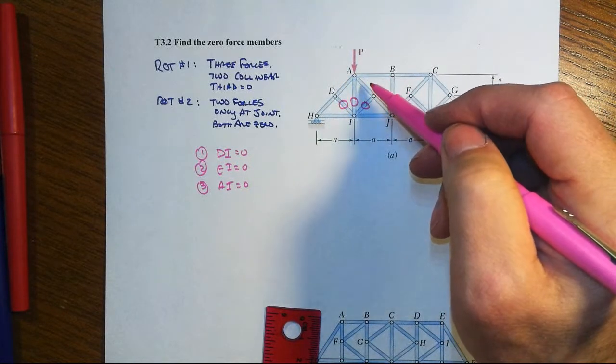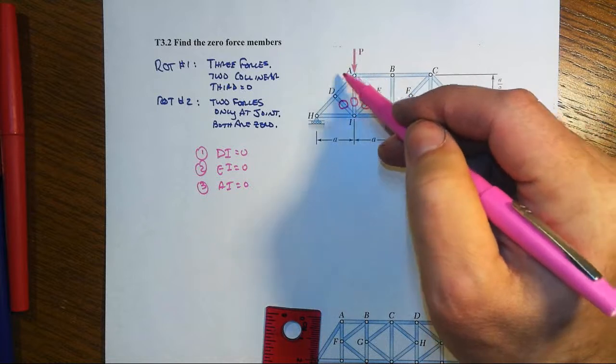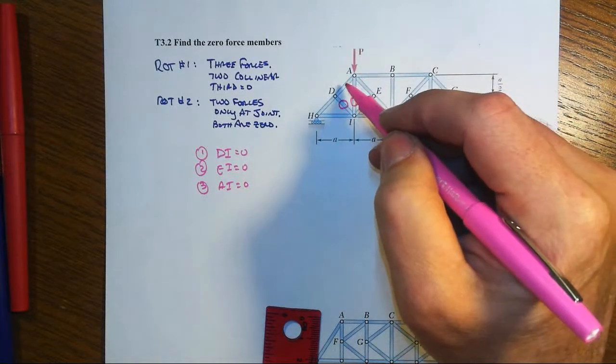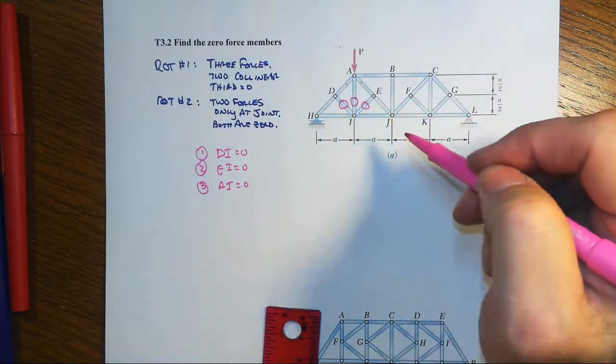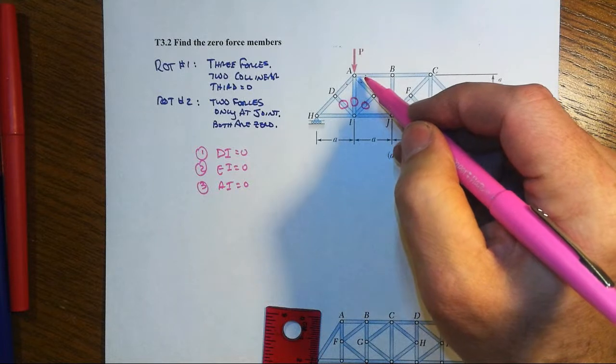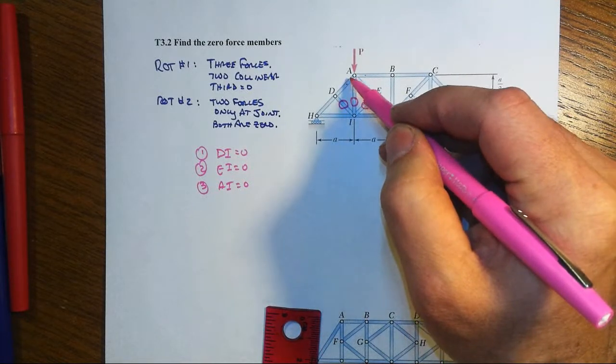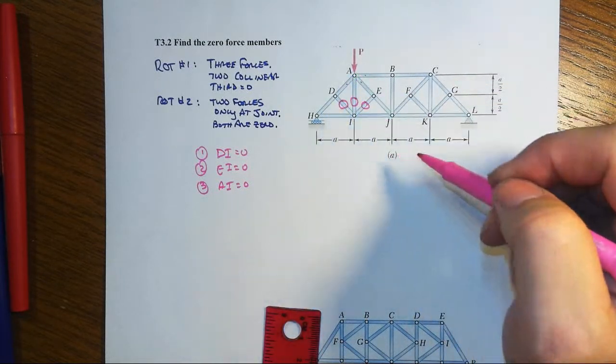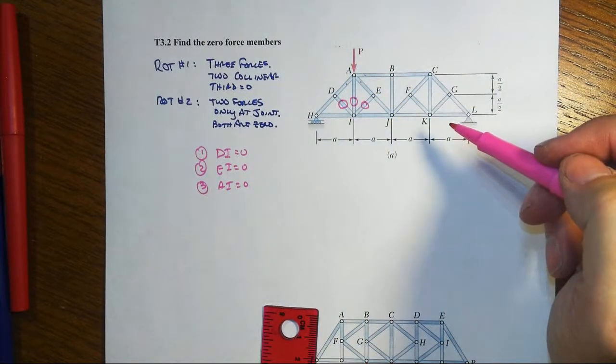But it's a good question to go back and say, well, then how does this structure resist these loads? Well, you still have one, two, three, non-zero, potentially four members here at joint A to help support the effect of the supplied load P.